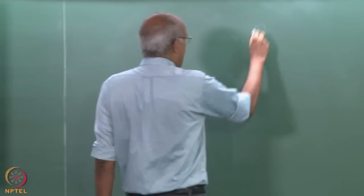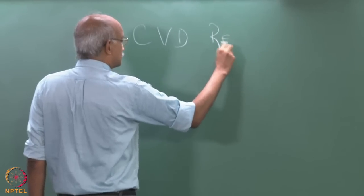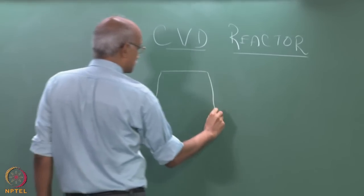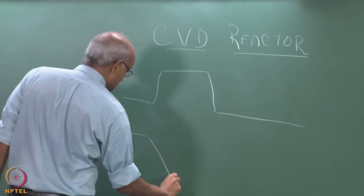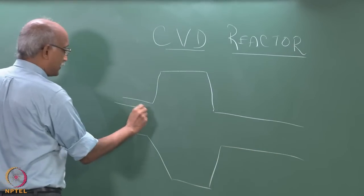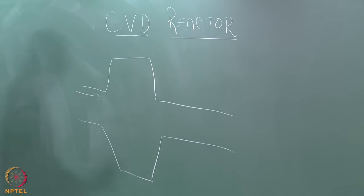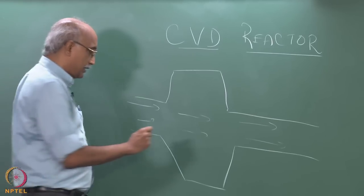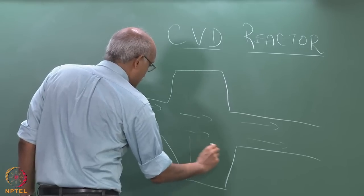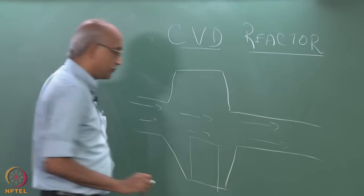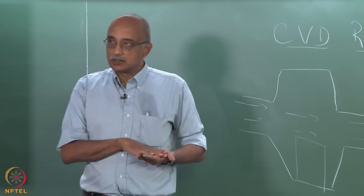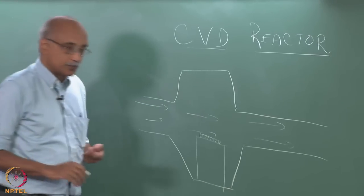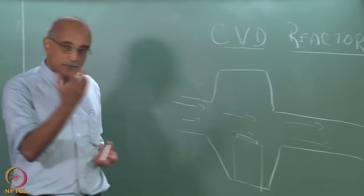In its most basic configuration, a CVD reactor has gases entering on one side and exiting at the other. There is a substrate holder, known as a susceptor, fixed typically to the bottom of the reactor. It is on top of the susceptor that deposition must take place — the deposit actually forms on top of this susceptor that is introduced to make the condensate form.